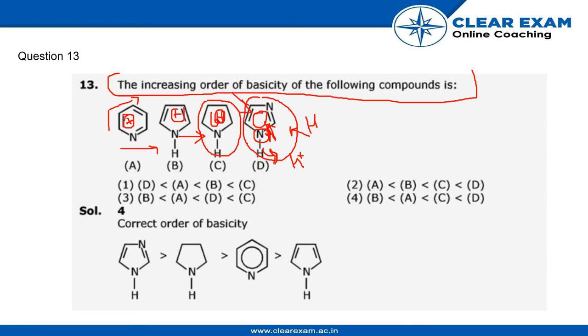Due to the H atom here, it can easily leave the H plus ion. So the second order will be this. Because of the aromaticity, it will leave the H plus ion. The methyl atoms make its basicity more than B because it is aromatic and it also has an H on it.